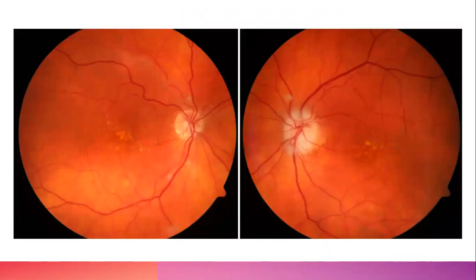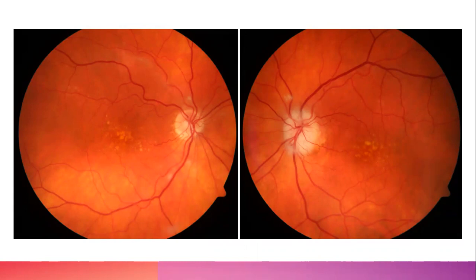Looking at this case: the optic disc on the right image appears edematous and swollen — you can't see the border. The left image, while perhaps not perfectly crisp to the inexperienced eye, is actually normal. The right eye has clearly abnormal unilateral disc swelling. When you look at the back of the eye, you should see a pale optic disc, red blood vessels, and intervening orange retinal tissue — everything else is abnormal.